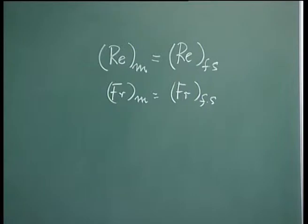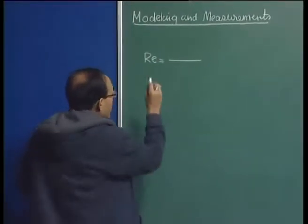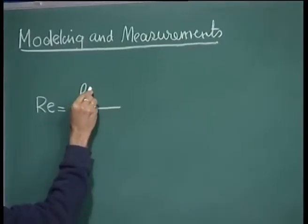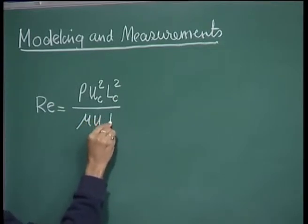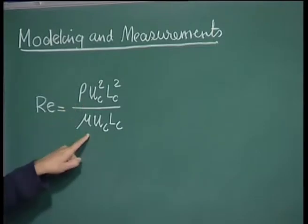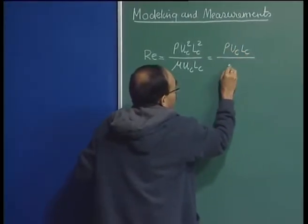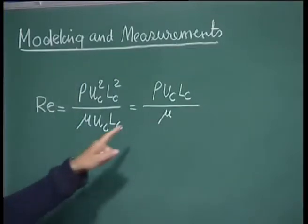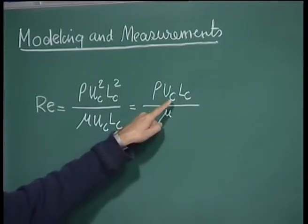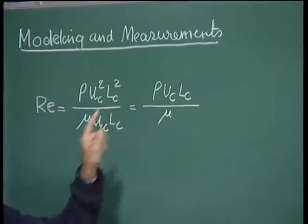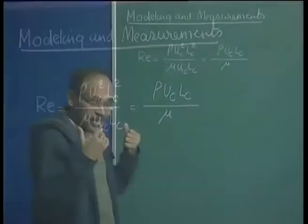Let us look at the definition of Reynolds number. Reynolds number, as we know, is inertial force divided by viscous force. The inertial force has an expression of the form ρU²L², and the viscous force also has dimensions of Newtons. Simplifying this gives us ρU_c L_c / μ. This is the traditional definition of Reynolds number, where ρ and μ are the density and viscosity of the melt, U_c is the characteristic velocity, and L_c is the characteristic length — the velocity and length scale of the system relevant for the present analysis.